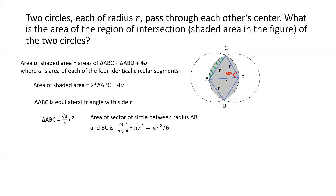From the figure, the area of that sector equals the area of the green-striped circular segment plus the area of triangle ABC. So we can write: πR²/6 = A + (√3/4)R², where A is the area of each of the four identical circular segments.